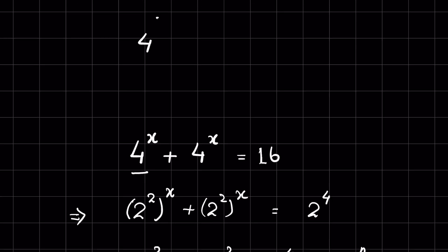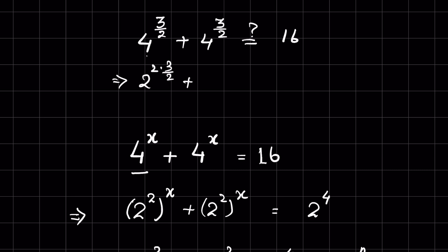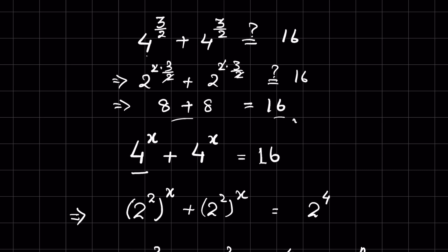We can verify: 4 raised to the power 3 upon 2 plus 4 raised to the power 3 upon 2. Writing 4 as 2 squared, we get 2 raised to the power 2 times 3 upon 2, plus the same — the 2s cancel giving 2 raised to the power 3, which is 8. So 8 plus 8 equals 16, confirming LHS equals RHS. The answer is verified. Please reduce all your questions and let me know in the comment section. Thanks for watching.